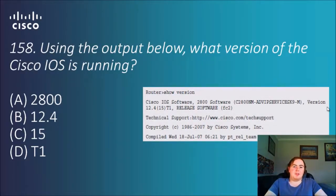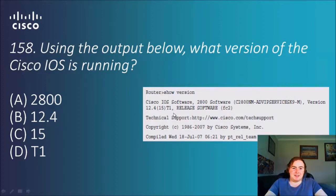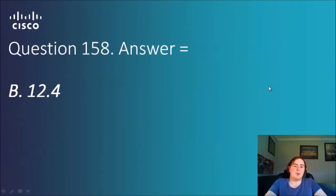Question 158: Using the output below, what version of the Cisco IOS is running? Options: 2800, 12.4, 15, or T1. The 2800 would be the model number. Reading the output, the version is shown clearly — version 12.4. So the answer is B, 12.4. This is simply a matter of knowing how to read the show version output and understanding what each field represents.